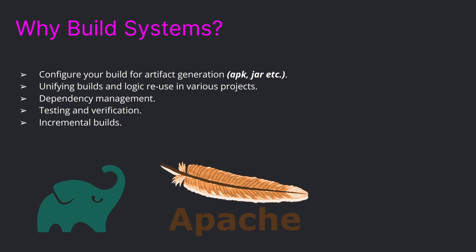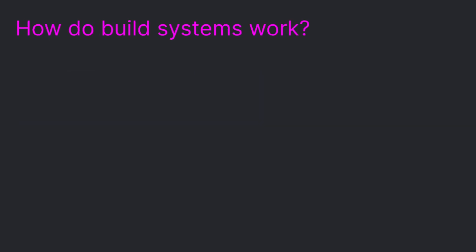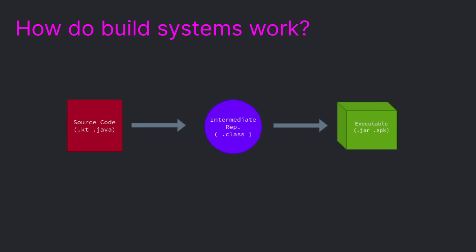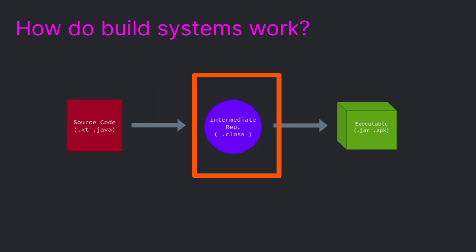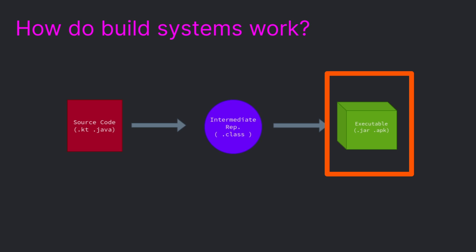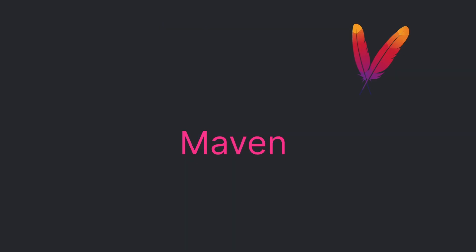Some examples of build systems include Gradle, Apache Ant, and Maven. Build systems transform code from the original source through a series of steps — dependent on the language, framework, or operating system — into an executable. First you have your source code written in Kotlin, Java, or any supported language. After that it is converted into an intermediate representation, which is then converted into an executable such as a JAR or an APK.